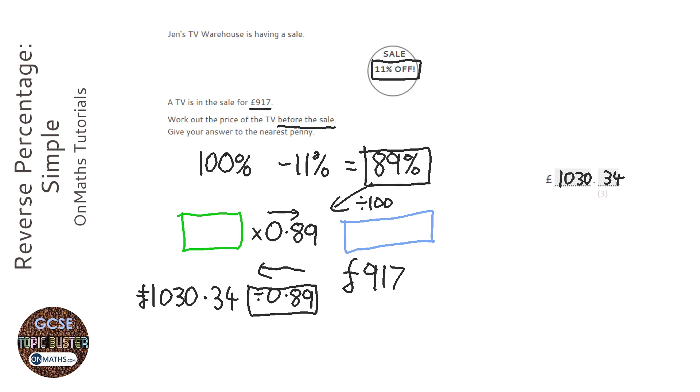Let's see if that makes sense. Well it kind of makes sense that it's gone down a little bit to £917. So the actual thing makes sense. We'd expect the price before the sale to be higher than the price on the sale. Something you can do to check that it works is you can then times the answer by 0.89 and there we go, we get £917. So it completely makes sense.